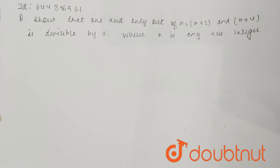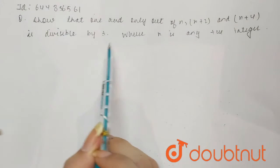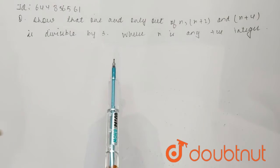Hello everyone. The question is: show that one and only one out of n, n plus 2 and n plus 4 is divisible by 3, where n is any positive integer.